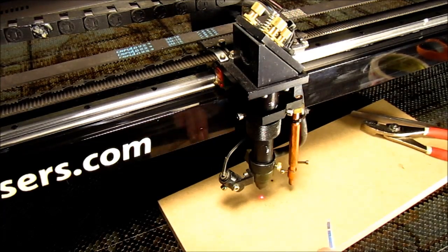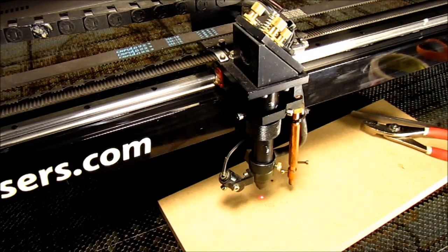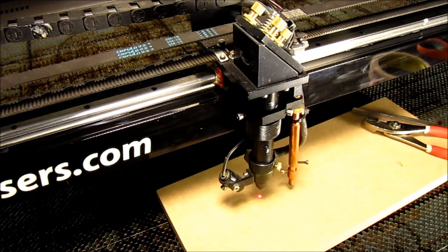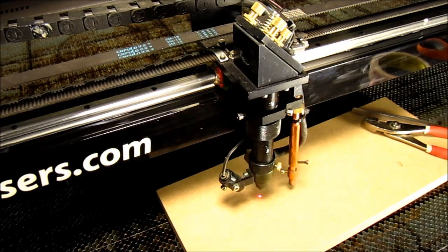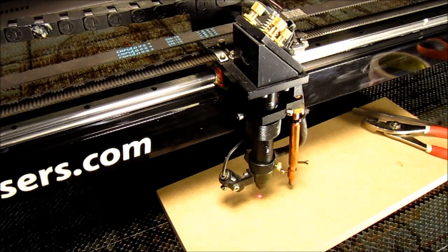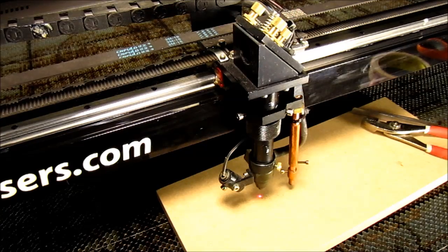During this process, you want to find the optimum focus setting, which is where the mark from the laser is the smallest within the focus spectrum. To find this optimal mark, move the z-axis up and down incrementally while firing the laser.